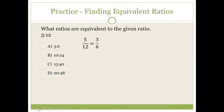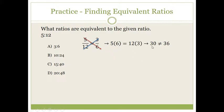Let's check example A: is five over twelve equal to three over six? I multiply five times six and twelve times three. Five times six is thirty, and that is not equal to twelve times three, which is thirty-six. So A is incorrect.